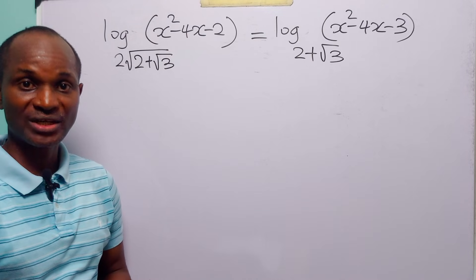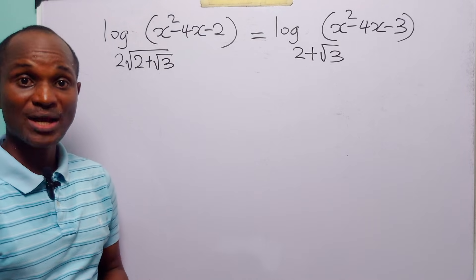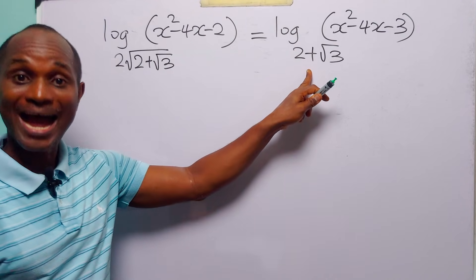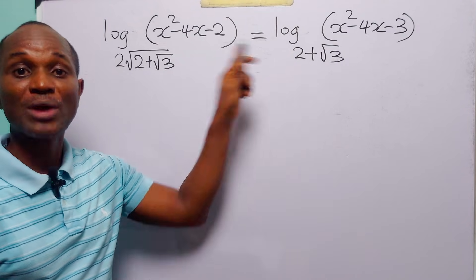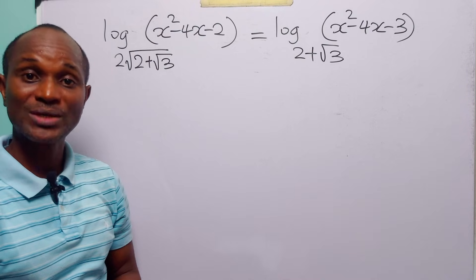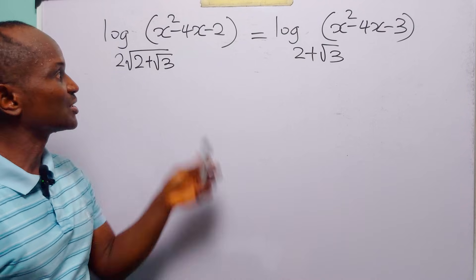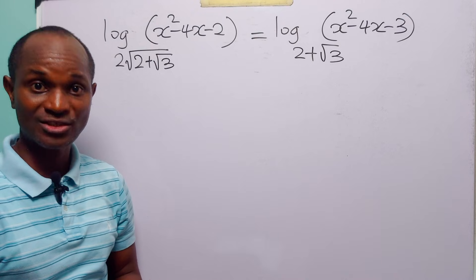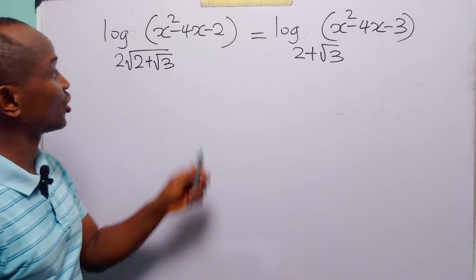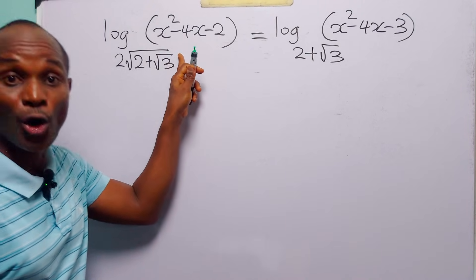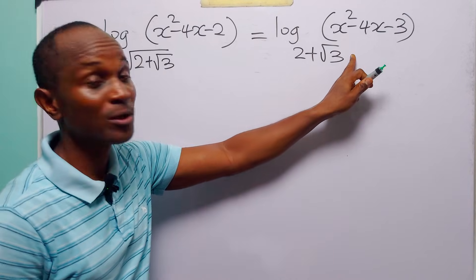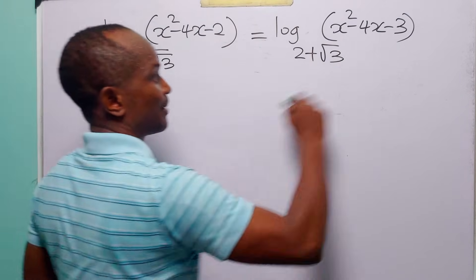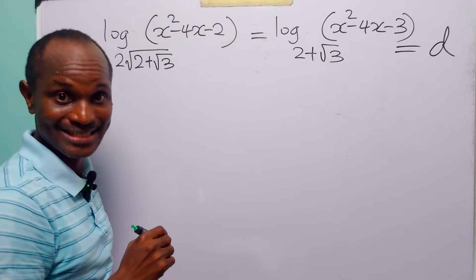Now that we are done with the simplifications, remember that usually when faced with a logarithmic equation in which the bases are different, we apply the change of base formula to work in one common base. But if we do that in this case we are going to run into a lot of complications. Since the question already tells us that this logarithm is equal to this logarithm, let us assume that both of them are equal to a constant d.